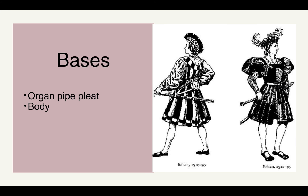Bases are an organ pipe pleated skirt that was occasionally tied around the waist. It could be attached to a sleeveless supporting top referred to as a body. A body and bases, if tied together, are basically indistinguishable from each other — they would match.